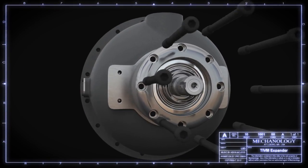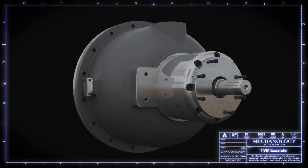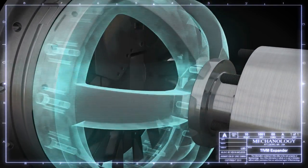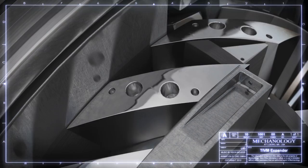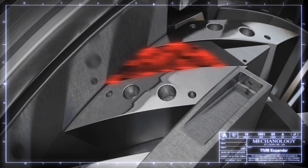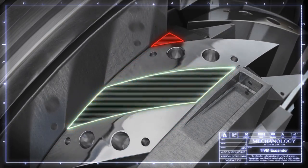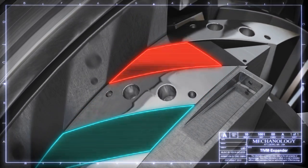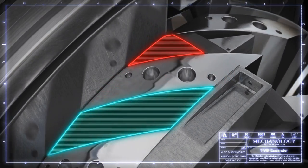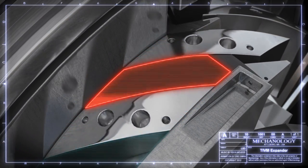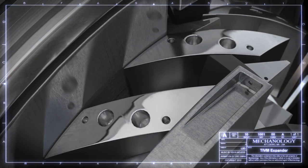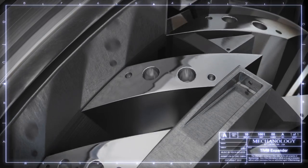Now we get a chance to peer inside the TIVM. As the animation shows, the volume of each successive expansion chamber grows from small to large. The high-pressure steam, shown in red, enters through the inlet port and expands with the growing volume of each expansion chamber. As the steam expands to a lower pressure in one chamber, a new charge of high-pressure steam is entering the following chamber. This is what allows the TIVM to be self-started from a dead stop by simply supplying pressurized steam to the inlet port.